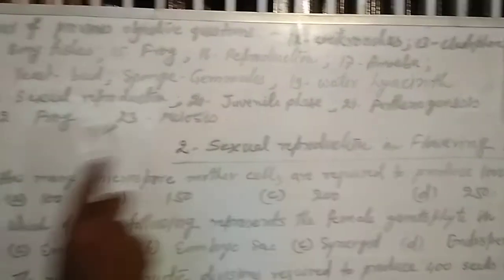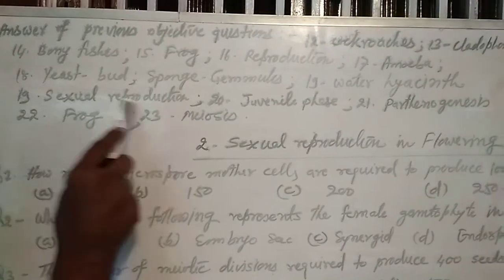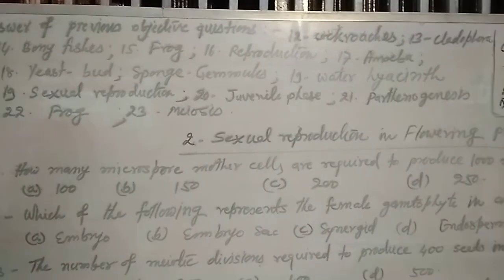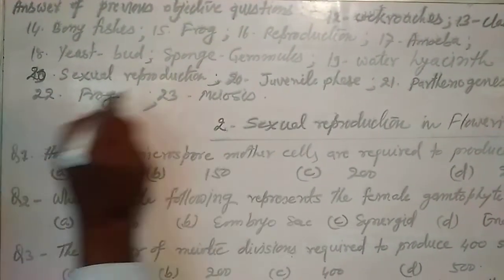These are the mode of sexual reproduction. 19: Water Hessian. 20: Sexual reproduction. 21: